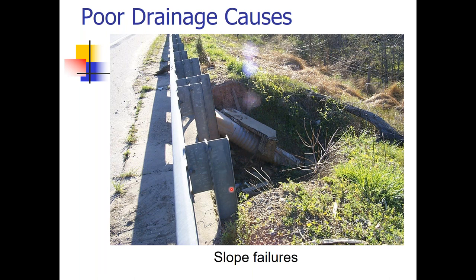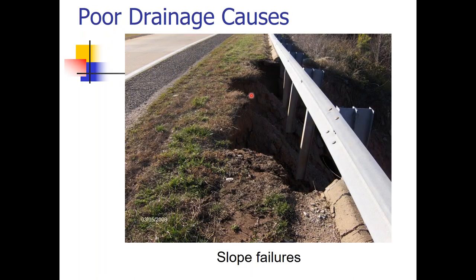When you have a slope failure this badly, the guardrail posts are not connected as they need to be. When a slope fails over such a period of time, we have to worry about those posts sticking into the ground. If a vehicle goes off the road and strikes the guardrail, it's not going to function the way it was meant to. It's not going to absorb the impact and send it down the guardrail properly because the slope has worn away. We want to address slope failures as soon as possible — not just for liability, but because that might be someone's family driving down that road.